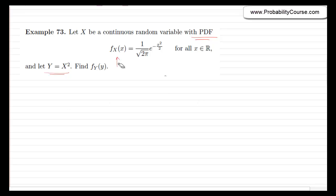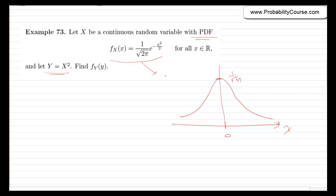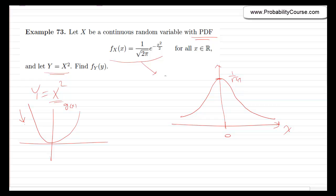The pdf of x is defined for all values of x. The maximum value is at 0, where it equals 1 over square root of 2π, and then it is a bell curve function. In fact, this is the pdf for a standard normal random variable. Now y equals x squared. This function is differentiable and nice — decreasing then increasing — so there is no problem; we can use the method of transformations.